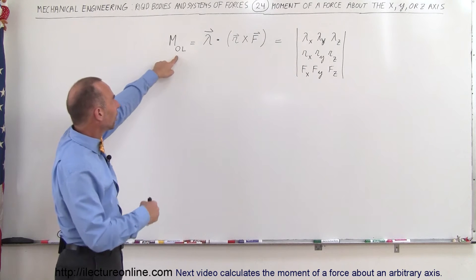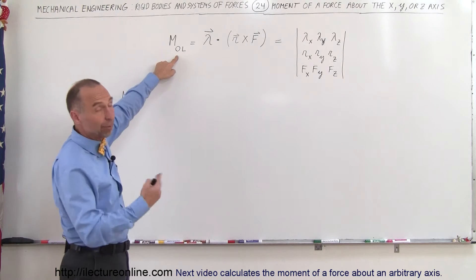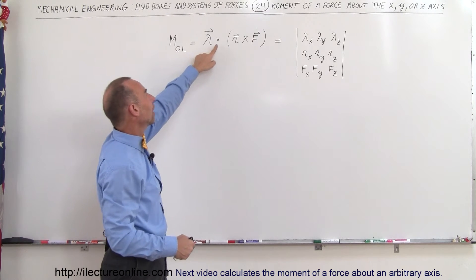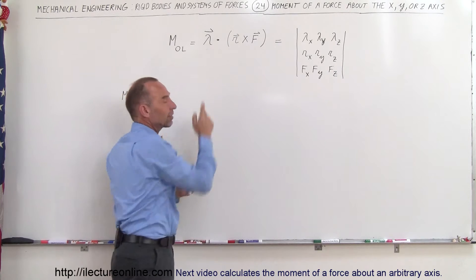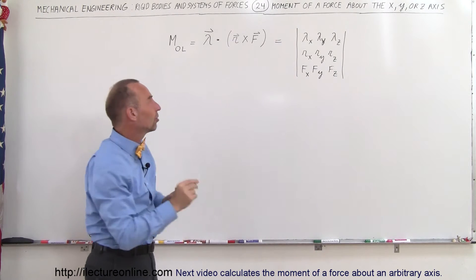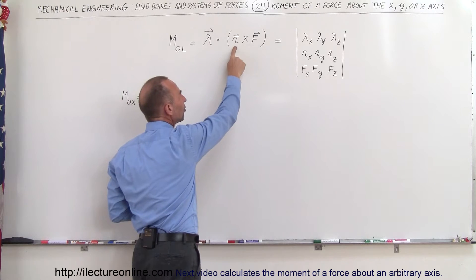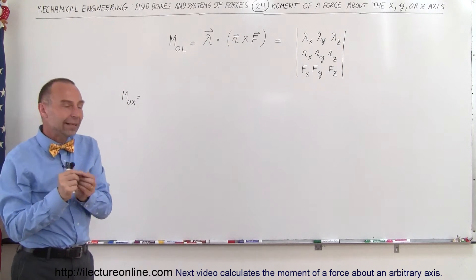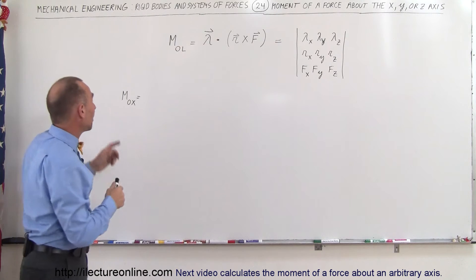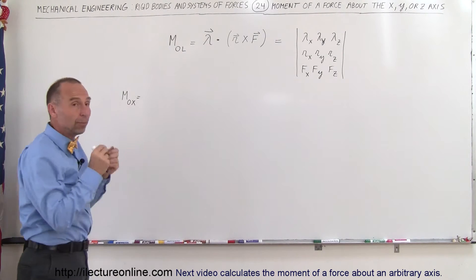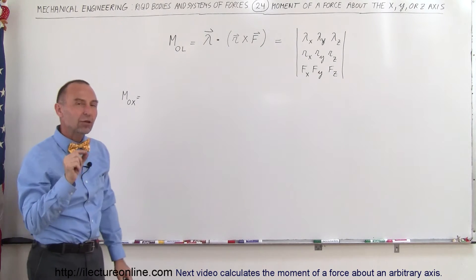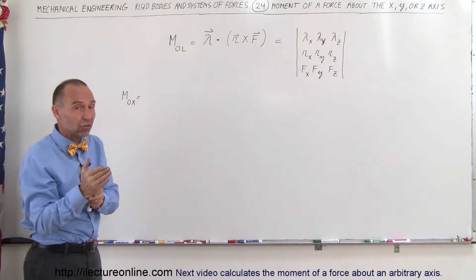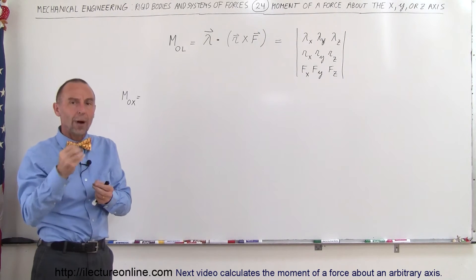The moment about any arbitrary axis — from the origin to some point in space, Ol — is going to be equal to the dot product of the unit vector along that axis times the cross product of the position vector and the force acting on the particle. Now imagine that the axis is the X axis, so we're finding the moment from the origin to the X axis. The unit vector in the X direction will only have a component in the X direction, with zero components in Y or Z.